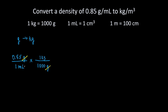Do not stop. We need to change milliliters to cubic meters. We are going to use two conversion factors — first changing milliliters to cubic centimeters and then to cubic meters. Prepare to multiply. We have milliliters on the bottom of the fraction, so we are going to take this conversion factor: 1 milliliter is 1 cubic centimeter, and write it right here.